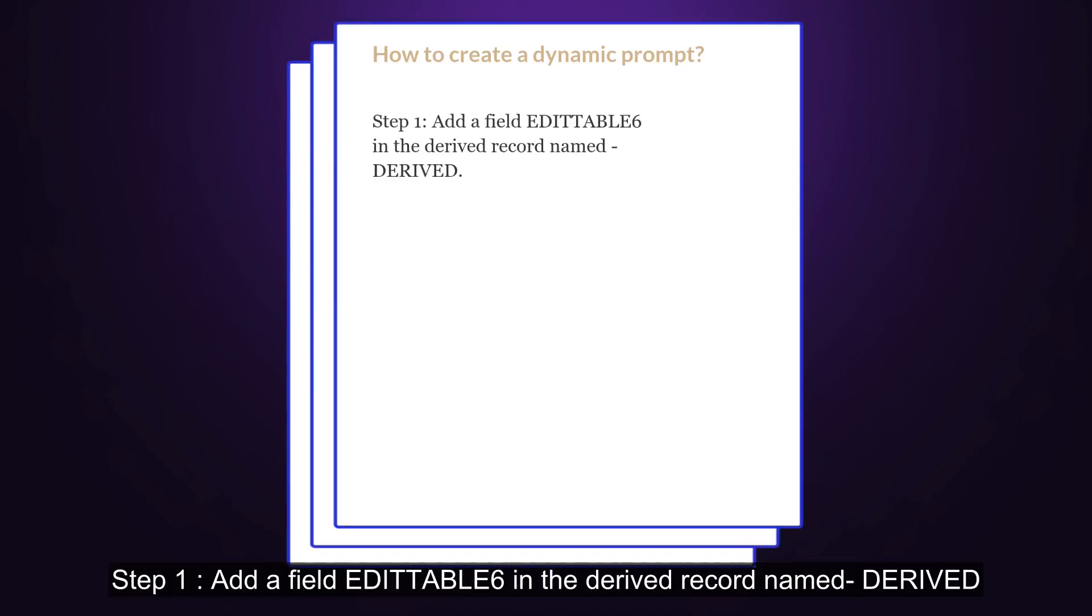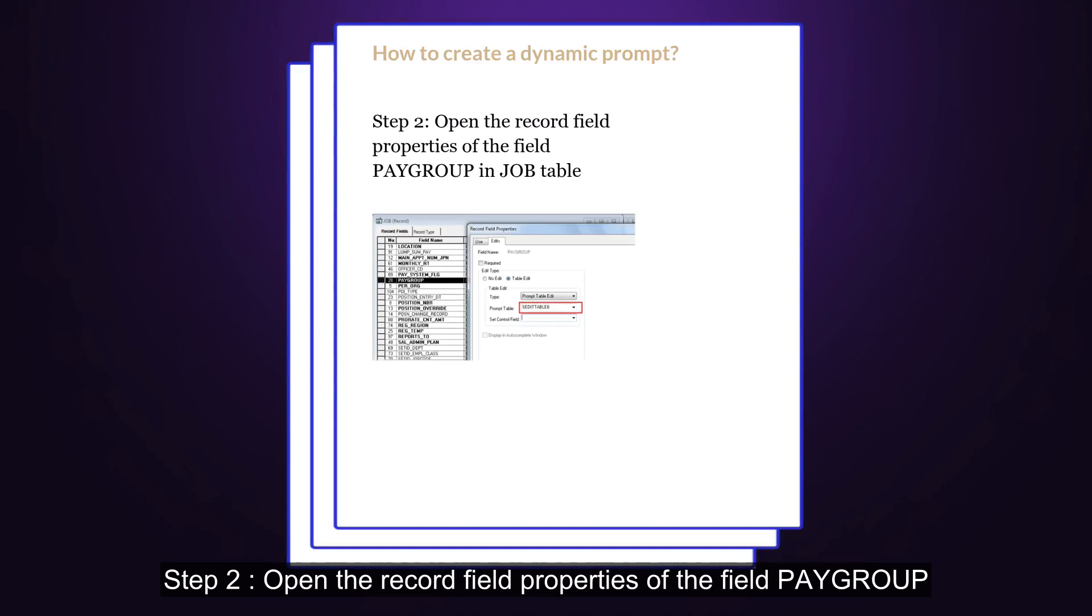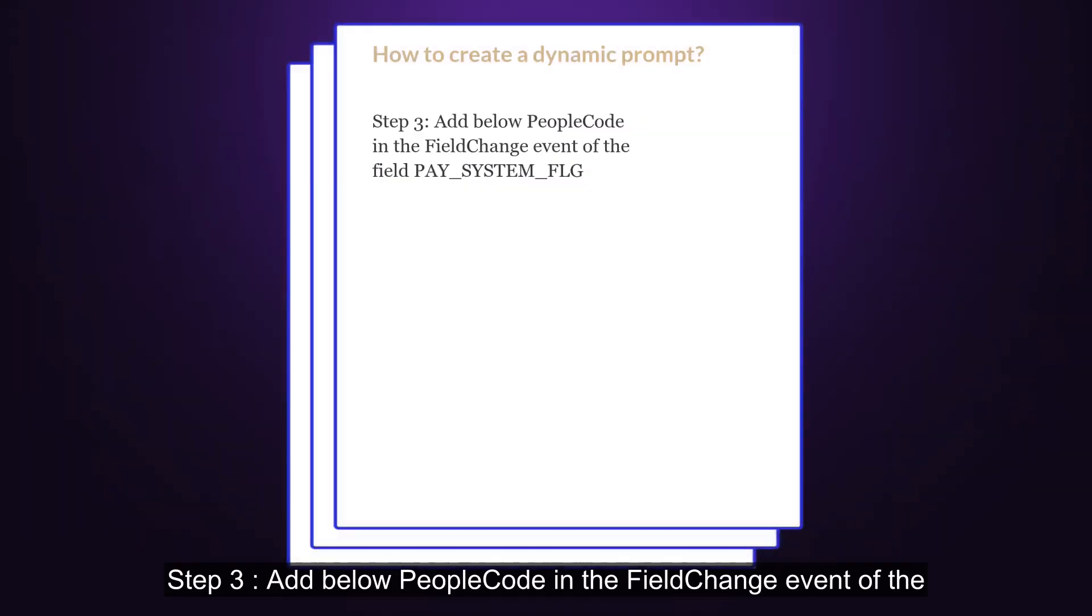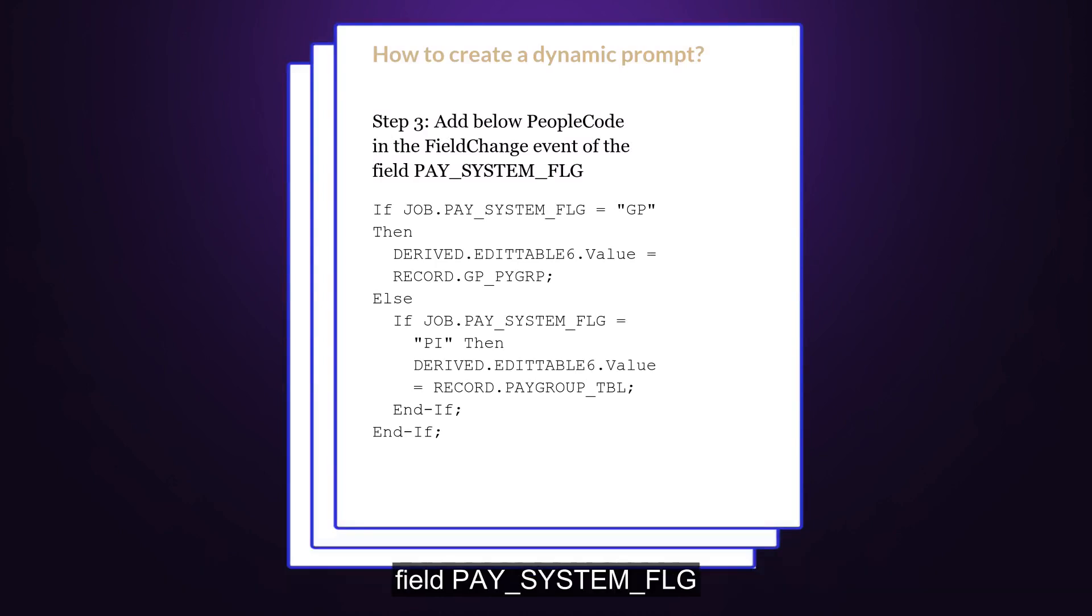Step 1: Add a field editable 6 in the derived record named Derived. Step 2: Open the record field properties of the field pay group in job table. Step 3: Add below PeopleCode in the field change event of the field PAY_SYSTEM_FLG.